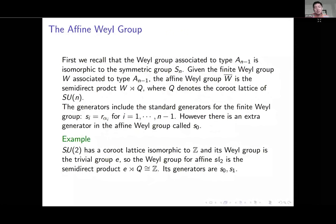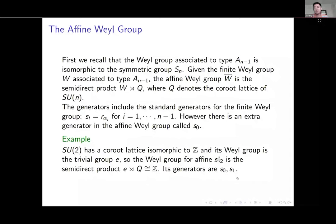What's important to remember is that there are certain generators for this. For the finite Weyl group, you have n-1 generators, s₁, s₂, all the way to s_{n-1}. The only difference is that for the affine version, you have just one extra generator called s₀. As a small example, the simplest example is SU(2). That has a Weyl group just equal to S₂, the group with two elements. The affine Weyl group for affine sl₂ is the semidirect product, which is isomorphic to Z as a group. It has two generators, s₁ and s₀, with no relation between them except s₀² = 1 and s₁² = 1.